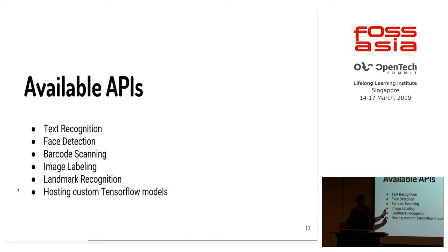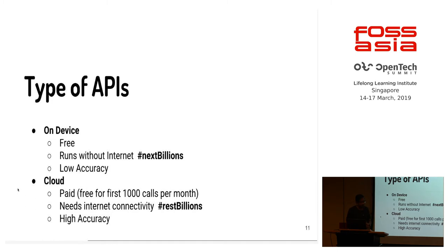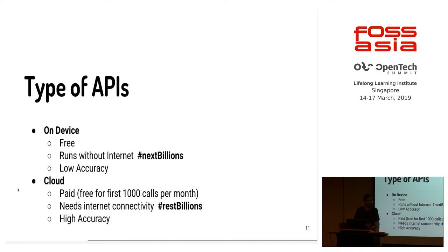The first five APIs are pre-built APIs that you cannot tweak or modify, but the last one you can customize to your own content. There are two types of APIs. First is the on-device API — it runs on your mobile, doesn't require an internet connection. It runs without internet, which is great for the next billion users. The con of the on-device API is that it has lower accuracy and limited results. The cloud API is paid, but for the first thousand calls per month it's free. It needs internet connectivity but has higher accuracy because it runs on Google Cloud and uses models trained there.